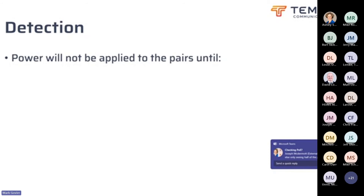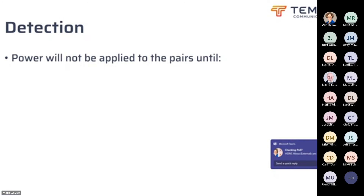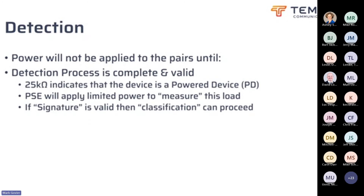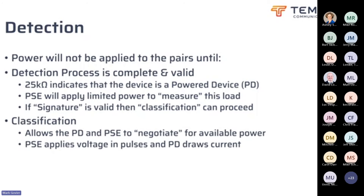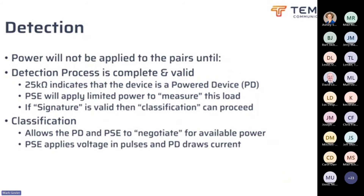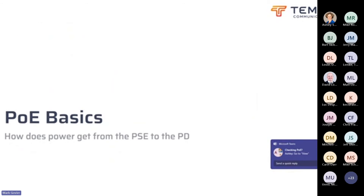The power sourcing equipment, at the beginning of the network, applies between 3 and 10 volts to the line, which is then monitored to check that the current is flowing in the system. If the power sourcing equipment detects a load of about 25,000 ohms, it will proceed to classify the actual provision. So if you imagine the far end device — the powered device — it applies a 25,000 ohm resistor to the circuit. That small amount of current then triggers the power sourcing equipment to begin a classification process.